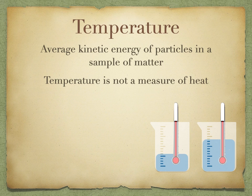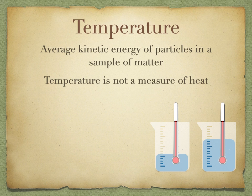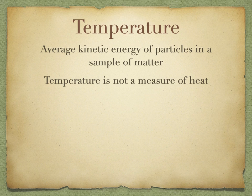Another way to see that heat and temperature are different: imagine two containers of the same liquid at the same temperature, one with more liquid than the other. If you heat both for the same amount of time at the same rate, the smaller container will reach a higher temperature. Having more of a substance means a higher capacity for absorbing heat, even at the same starting temperature — so heat and temperature must be distinct.